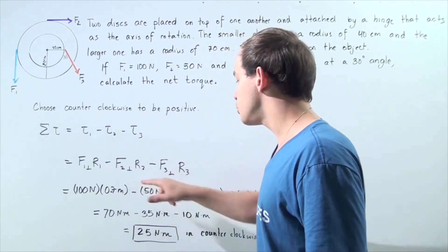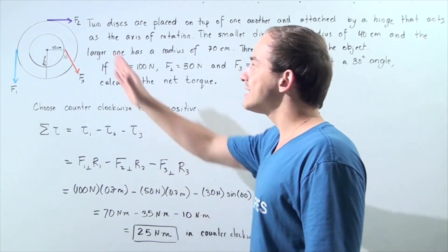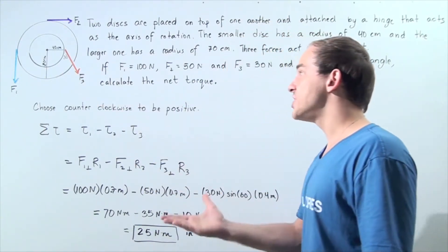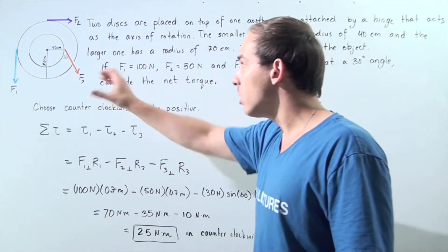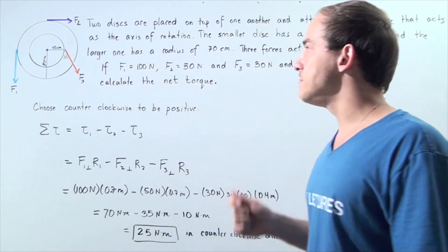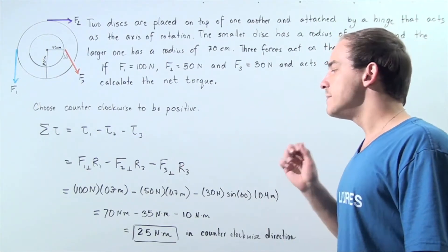Notice R1 and R2 are exactly the same: 70 centimeters or 0.7 meters. And R3 is simply the radius of the smaller circle: 40 centimeters or 0.4 meters.